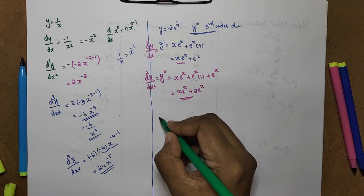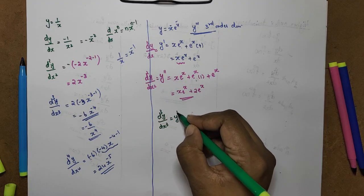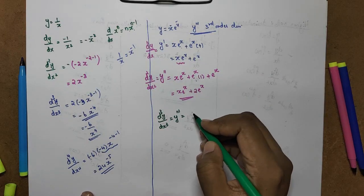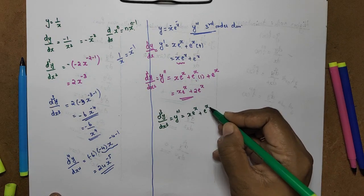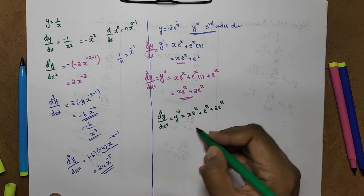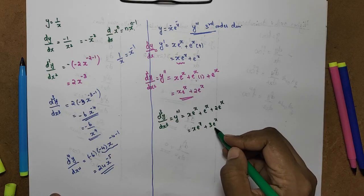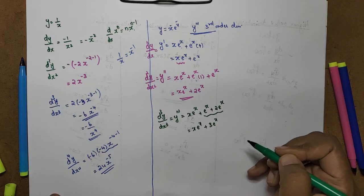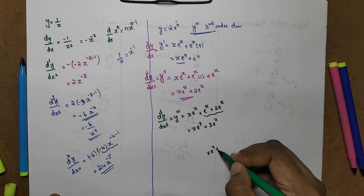For the third derivative d³y/dx³: differentiate x·eˣ + 2eˣ. Applying product rule to x·eˣ: first function x into derivative of eˣ is eˣ, plus second function eˣ into derivative of x is 1, plus 2·eˣ. This gives x·eˣ + eˣ + 2eˣ = x·eˣ + 3eˣ. For the fourth derivative y^(4): x·eˣ + 4eˣ. You can see the pattern — the coefficient increases by 1 each time.